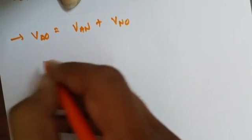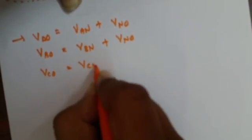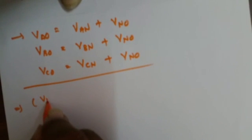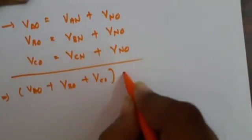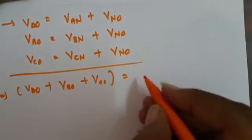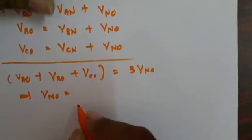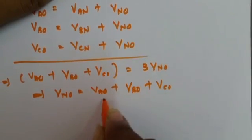So: V_AO = V_AN + V_NO, V_BO = V_BN + V_NO, and V_CO = V_CN + V_NO. If we add all three equations, then V_AO + V_BO + V_CO equals V_AN + V_BN + V_CN, which results in zero for a balanced 3-phase system. So this becomes 3 times V_NO. Therefore, V_NO = (V_AO + V_BO + V_CO) / 3.